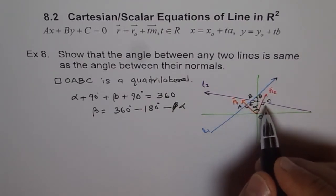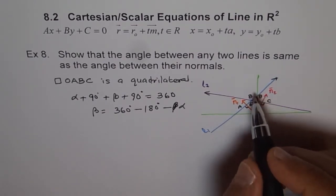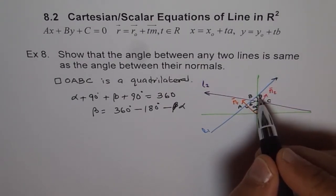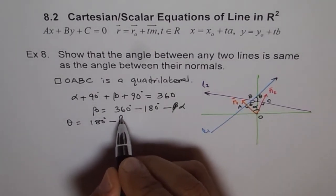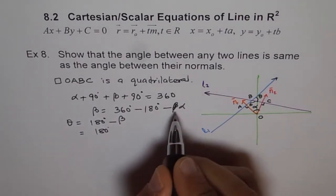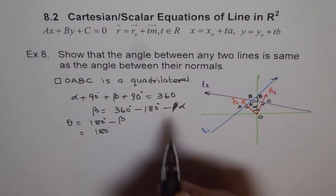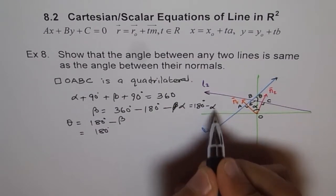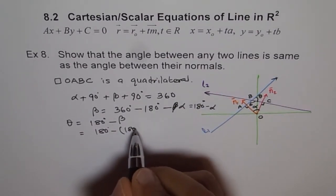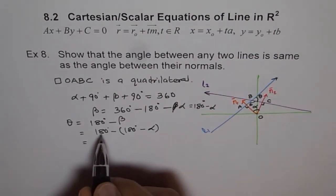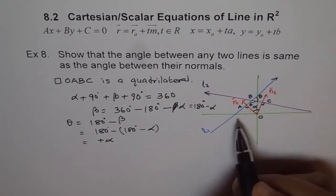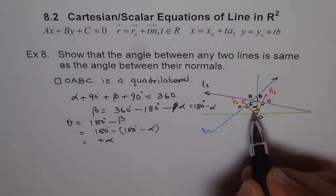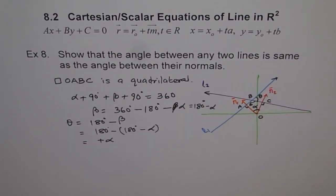Now look at the angle between the two lines. The angle between the two lines is theta. Since this is a straight line, theta equals 180 minus beta. Substituting the value of beta: theta equals 180 degrees minus (180 degrees minus alpha), which gives 180 minus 180 plus alpha. So theta equals alpha — the angle between the two lines is the same as the angle between the two normals. This is how we prove that the angle between any two lines is the same as the angle between their normals.